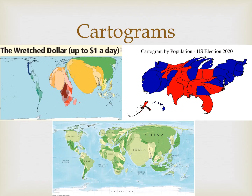Our last type of thematic map is cartograms. In much the same way that proportional symbol maps combine a map and a graph, so do cartograms — but now the map is the graph. Cartograms distort the shape and size relative to the data they represent. On the bottom we have a cartogram of global population. Notice China takes up ten times more space than Russia because China has ten times more people than Russia, despite the fact that Russia is significantly larger in land area. So map scale is irrelevant on cartograms.